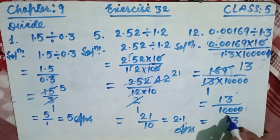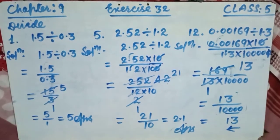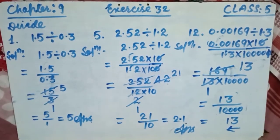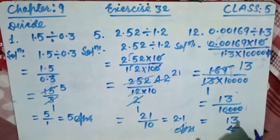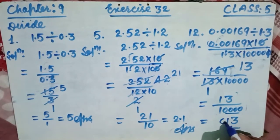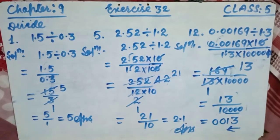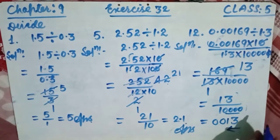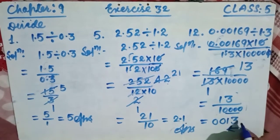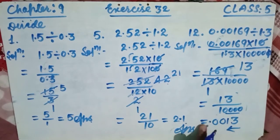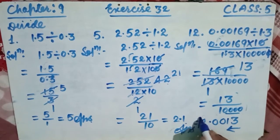Write the numerator 13 as it is and count the zeros in the denominator: there are four zeros. Place the decimal four digits from the right. Since 13 has only two digits, add two zeros before it, making it 0013. Placing the decimal gives the final answer of 0.0013.